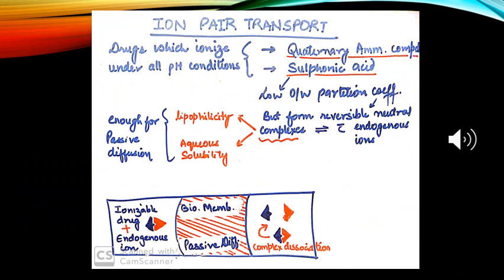Ion pair transport applies to drugs which ionize under all pH conditions. A complex is formed between the ionized drug and an endogenous ion. This complex transfers through the biological membrane and then dissociates back. An example is quaternary ammonium compounds and sulfonic acid. Sulfonic acid has a low oil-water partition coefficient, but it forms reversible neutral complexes with endogenous ions that have sufficient lipophilicity and aqueous solubility for passive diffusion.